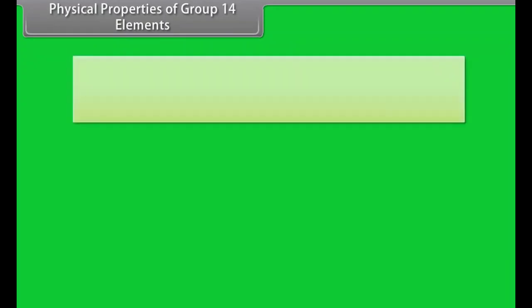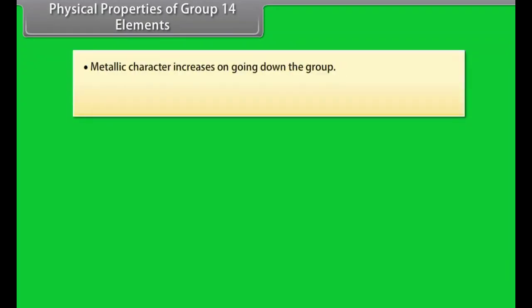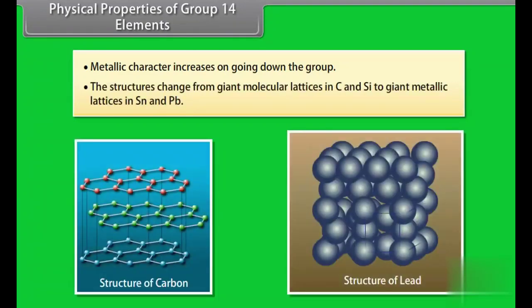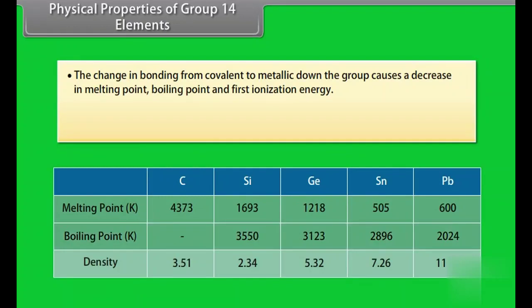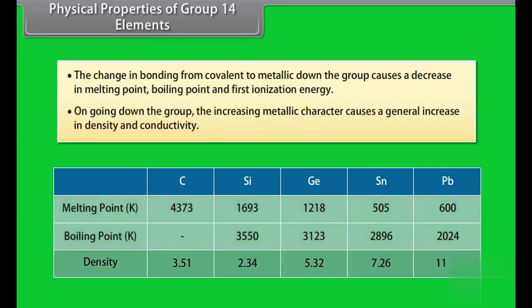Physical properties of group 14 elements. Metallic character increases on going down the group. The structures change from giant molecular lattices in carbon and silicon to giant metallic lattices in tin and lead. The change in bonding from covalent to metallic down the group causes a decrease in melting point, boiling point and first ionization energy. On going down the group, the increasing metallic character causes a general increase in density and conductivity.